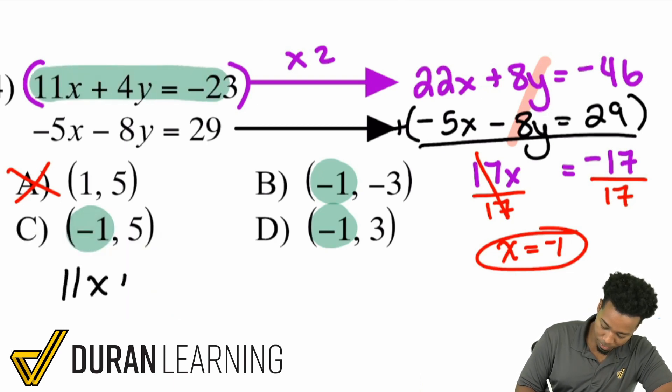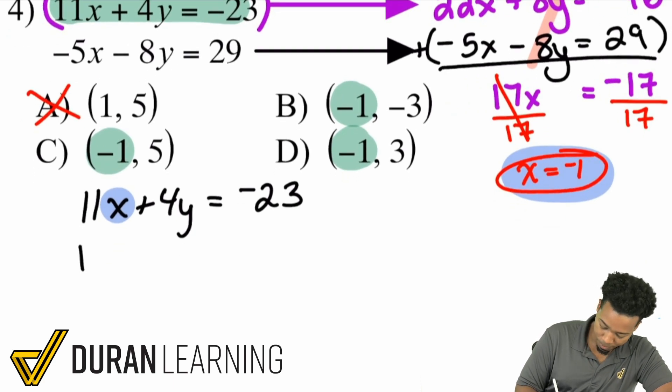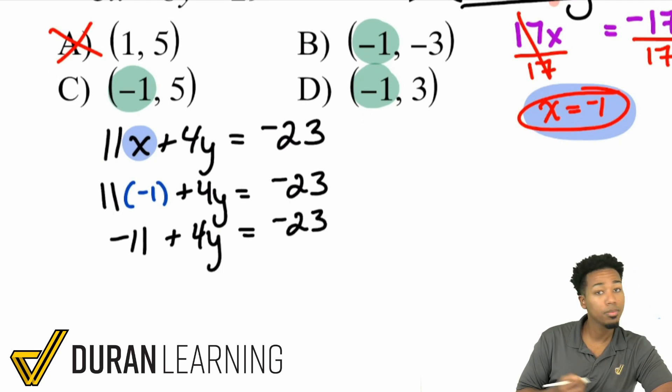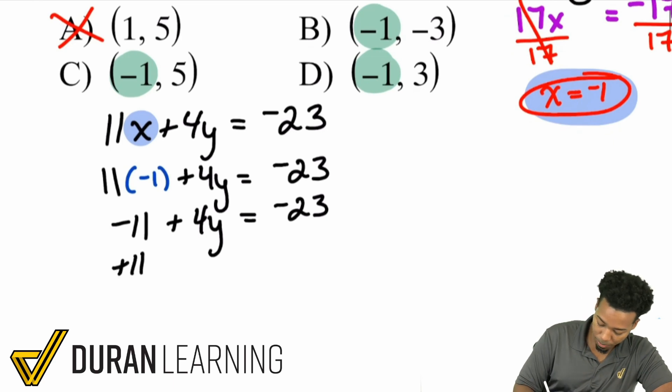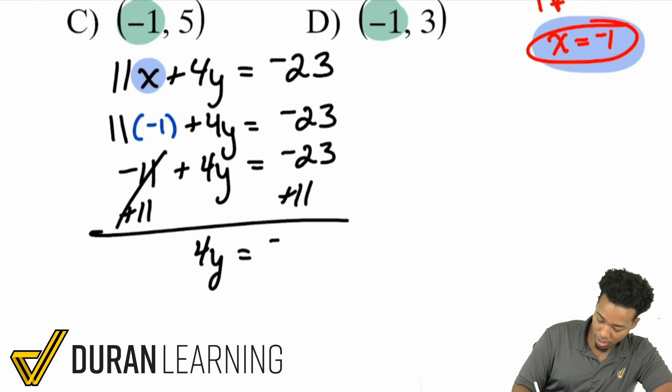We'll have 11x plus 4y equals negative 23. We found that x equals negative 1, so I'll plug that right in. 11 times negative 1 plus 4y equals negative 23. 11 times negative 1 is negative 11 plus 4y equals negative 23. Add 11 to both sides, giving me 4y equals negative 12. And then from there, I go ahead and divide both sides by 4.